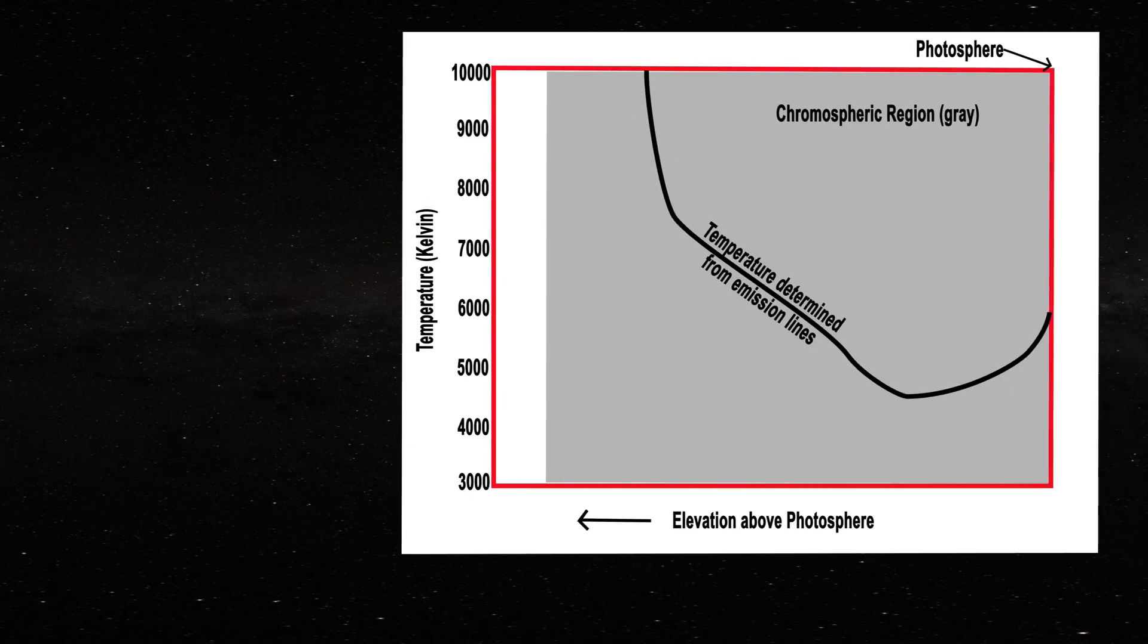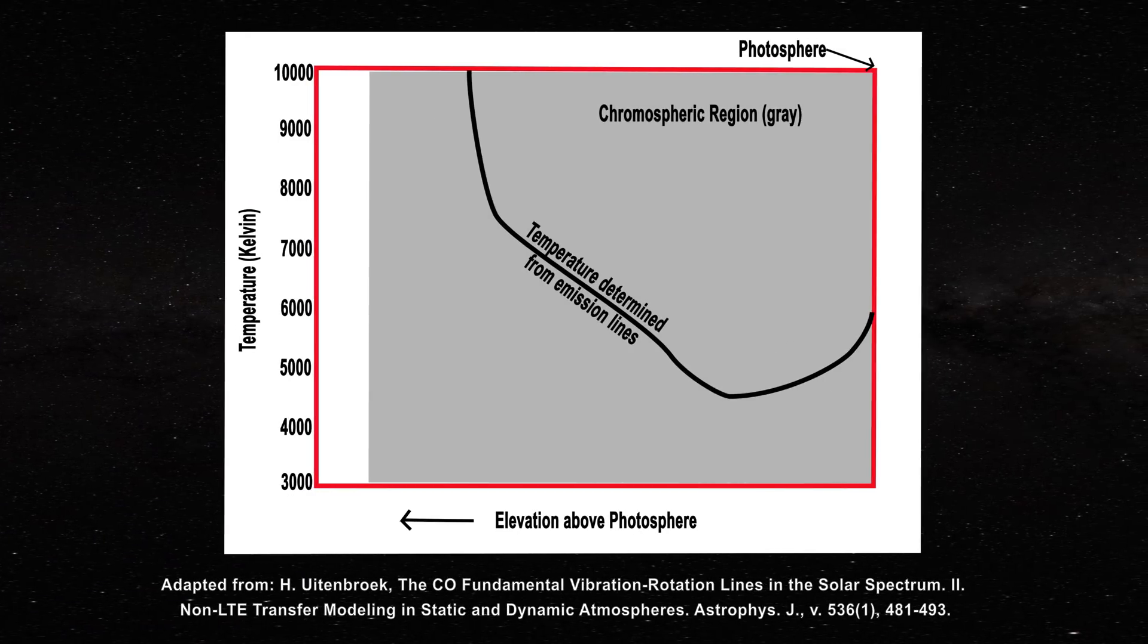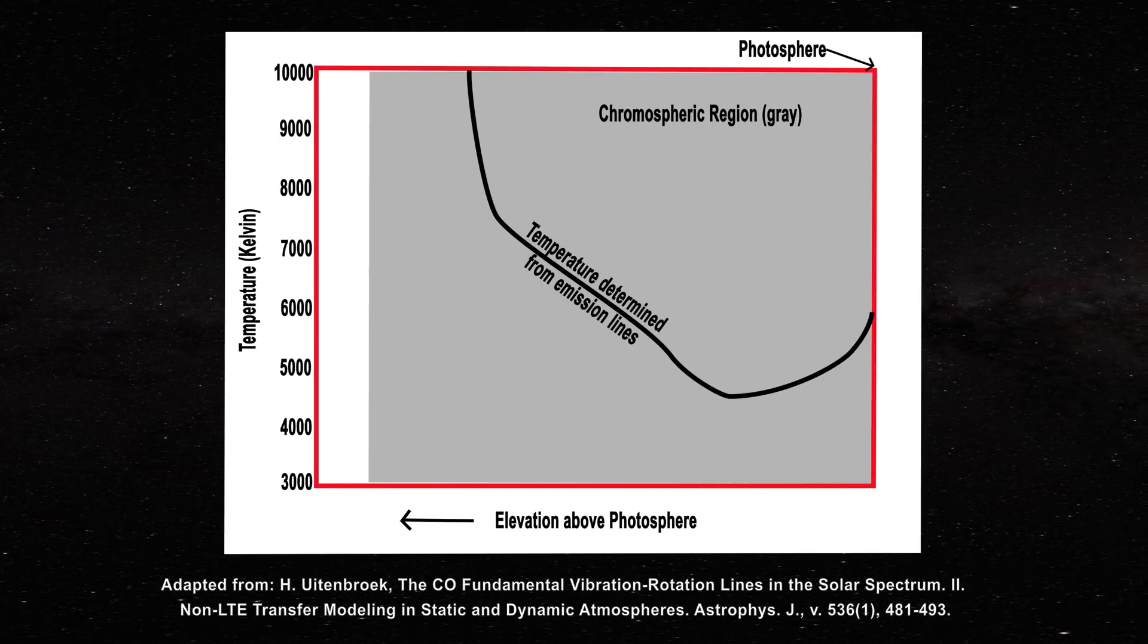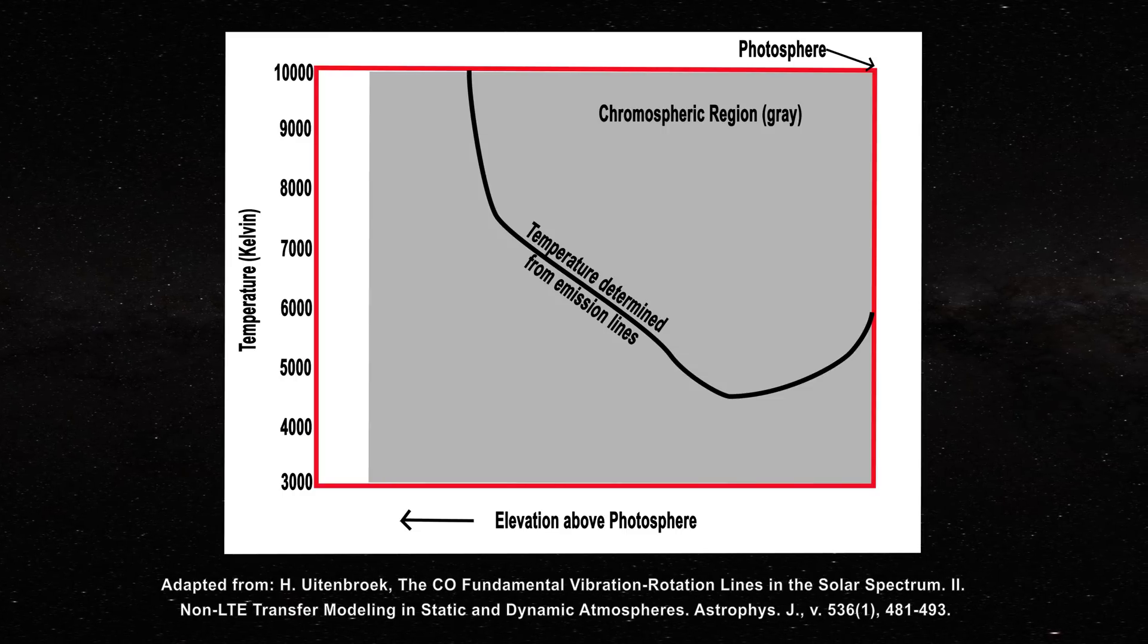In the standard model the chromosphere is said to have temperatures of about 6,000 Kelvin near the photosphere. It then cools slightly with elevation as you can see in this figure. Then it experiences a meteoric rise in temperature as it approaches the corona.